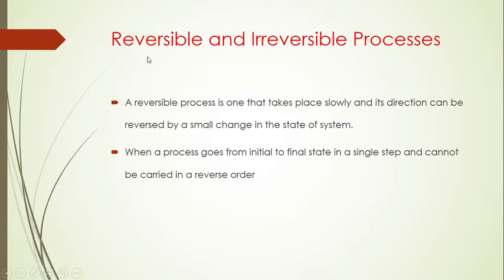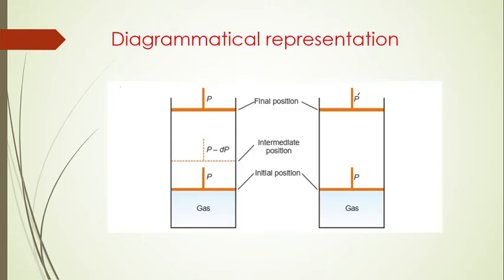A reversible process is one which takes place slowly and its direction can be reversed by a small change in the state of the system. An irreversible process, however, proceeds from the initial point to the final state in a single step abruptly, and it cannot be reversed.